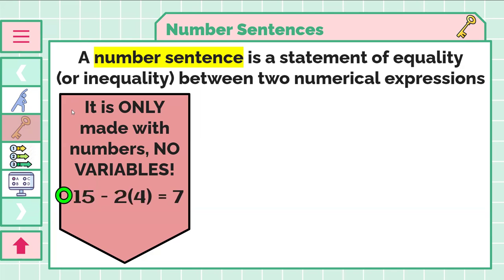So 15 minus 2 times 4 equals 7, that is a number sentence. Meanwhile, 2x plus 2 equals 10, that is not a number sentence because it has that variable x.